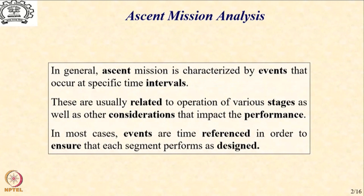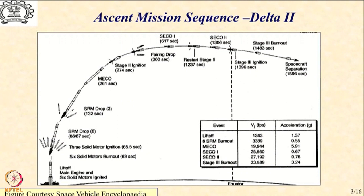In most cases, the events are time-referenced in order to ensure that each segment performs as designed and that there is a way by which you could verify the performance — whether it has happened in the specified time. I want to show you a typical ascent mission sequence for a Delta II rocket. The figure is taken courtesy of the Space Vehicle Encyclopedia. What I would like you to look at is the various events, their sequence, and the respective time stamp.